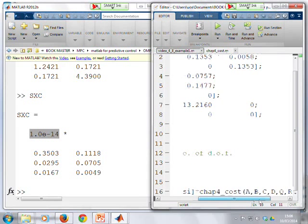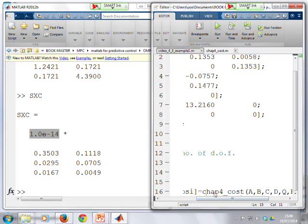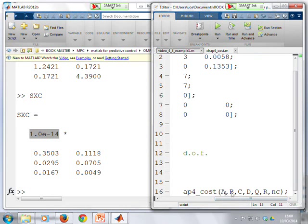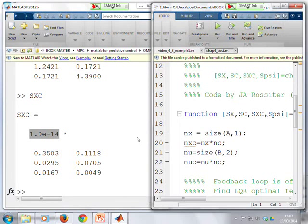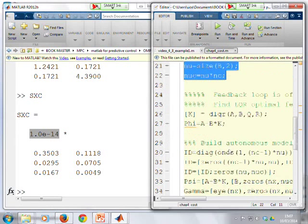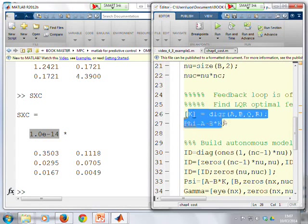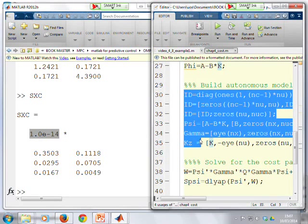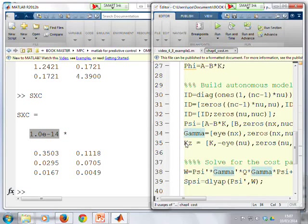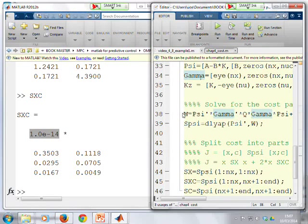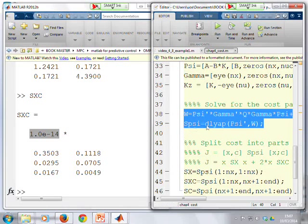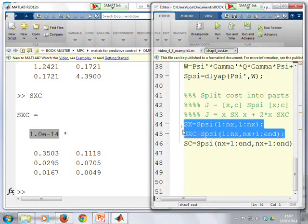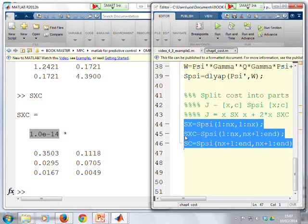And you'll see it's called chapter4 underscore cost. And it's got arguments A, B, C, D, Q, R, and NC. So if we go and have a look in that file, again, you'll see it's a very simple file. A bit of bookkeeping to define the dimension of your system. Define your LQR controller using DLQR and your phi matrix. And then you'll see a few lines to build your autonomous model. So that just goes through exactly what we've done in this video. You build your sin matrix, your gamma, your KZ. So nothing complicated there. Then you do your Lyapunov equation to solve for this big S matrix. There it is. And then you simply extract the different bits. So you'll notice the code is very simple, very brief.